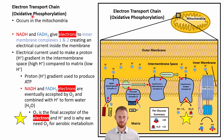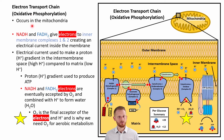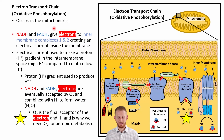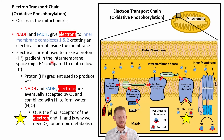Now let's look at the electron transport chain. Another name for this is oxidative phosphorylation — they're the same thing. This also occurs in the mitochondria and is an aerobic process. In this process we take the NADHs and FADH2 molecules produced in glycolysis and the Krebs cycle and strip off their electrons and hydrogen ions to drive the process.